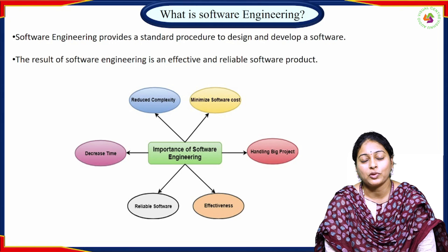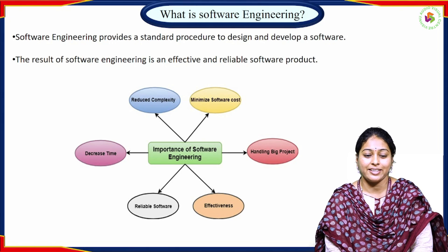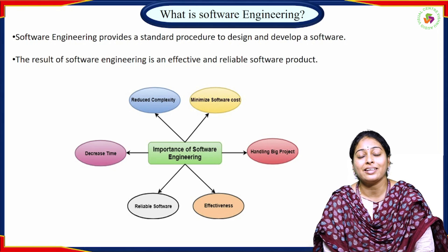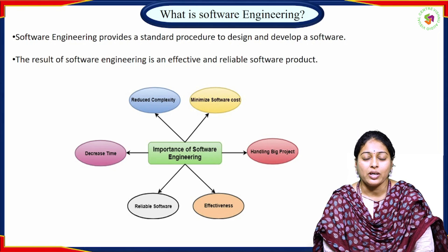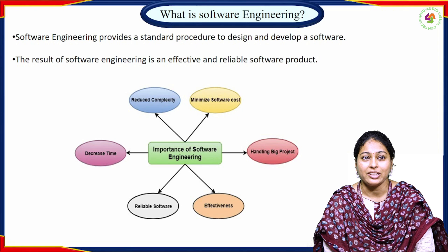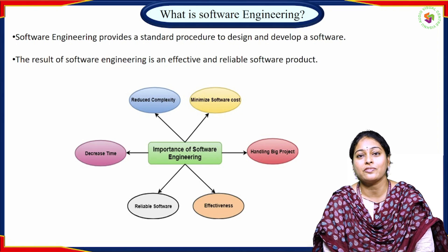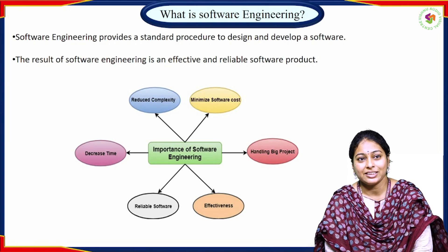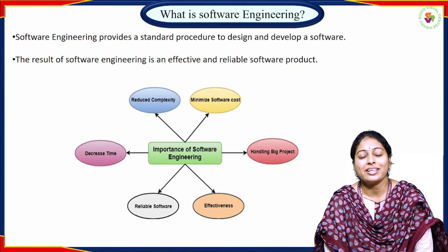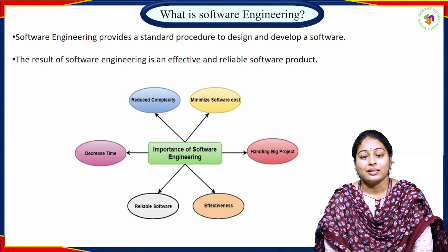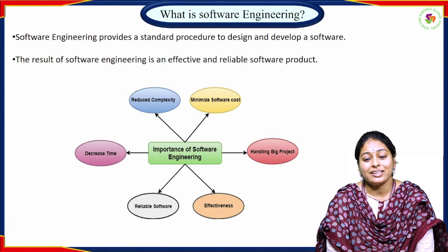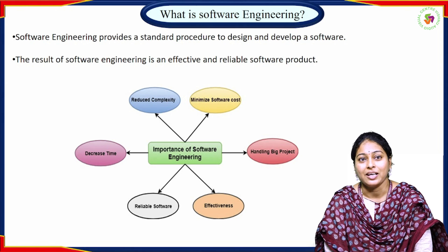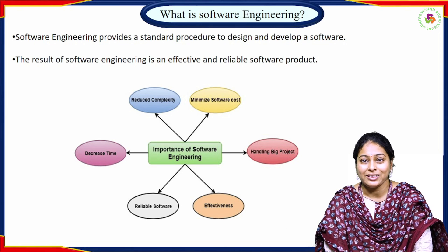What actually is software engineering? Software engineering provides a standard procedure for designing and developing software. Software is the combination of programs, data structures, and documentation. So software engineering is a systematic and disciplined approach to develop software. Ultimately, the result of software engineering is an effective and reliable software which is wanted by the customer.